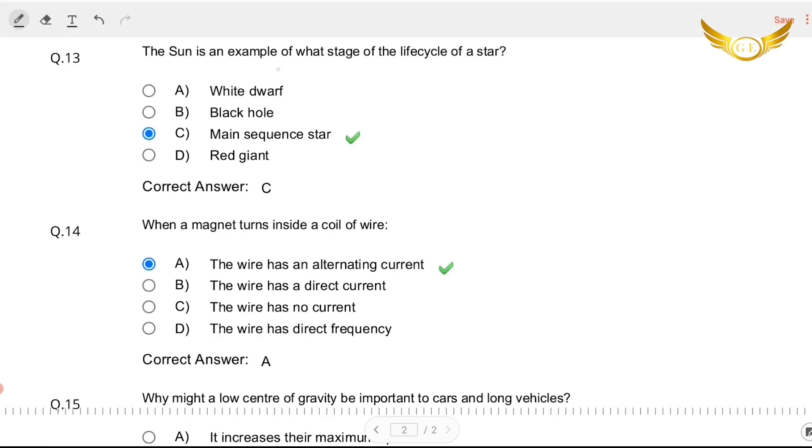The next question. The sun is an example of what stage of the life cycle of a star? Well the answer to it is main sequence star. Don't ask me the logic behind this. I don't know how it is but the answer is main sequence star. So C is the right option. So the sun is the stage of what's a life cycle star, basically it is a main sequence star.